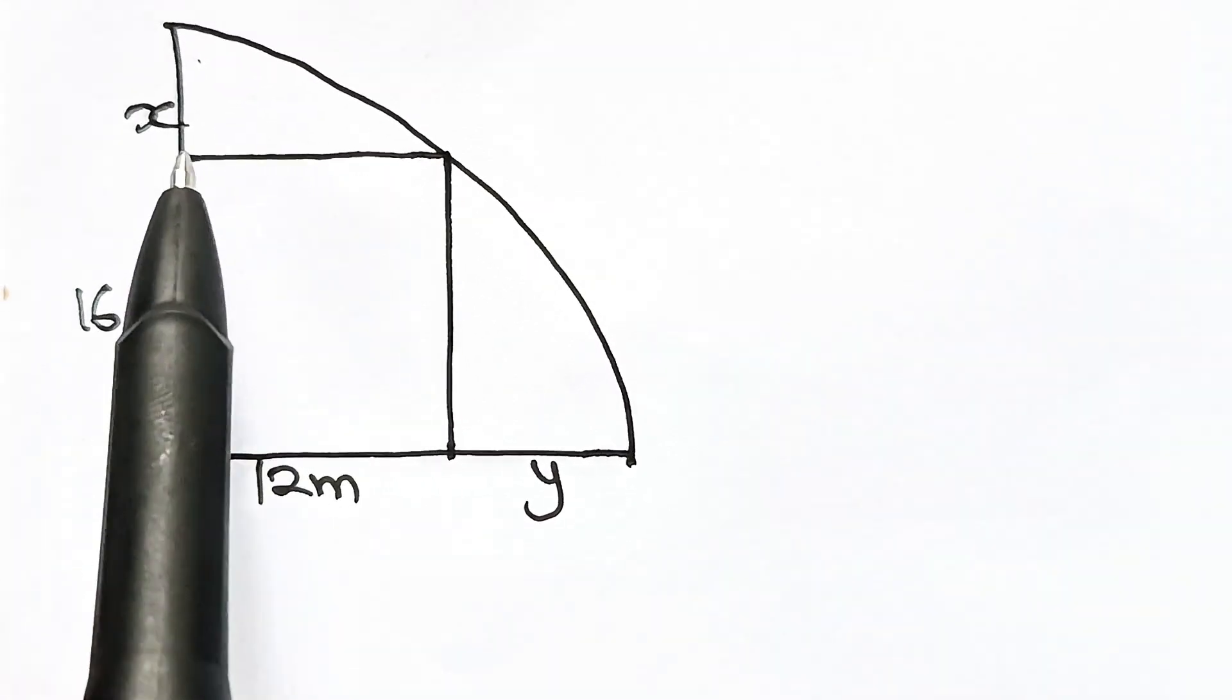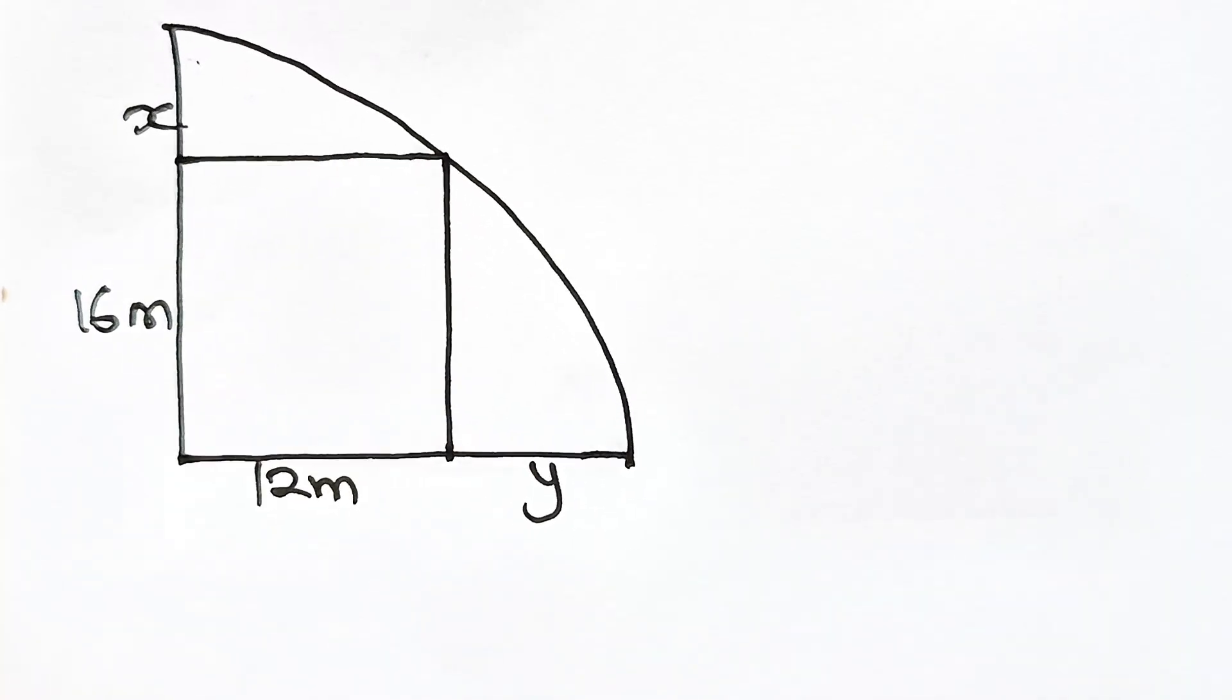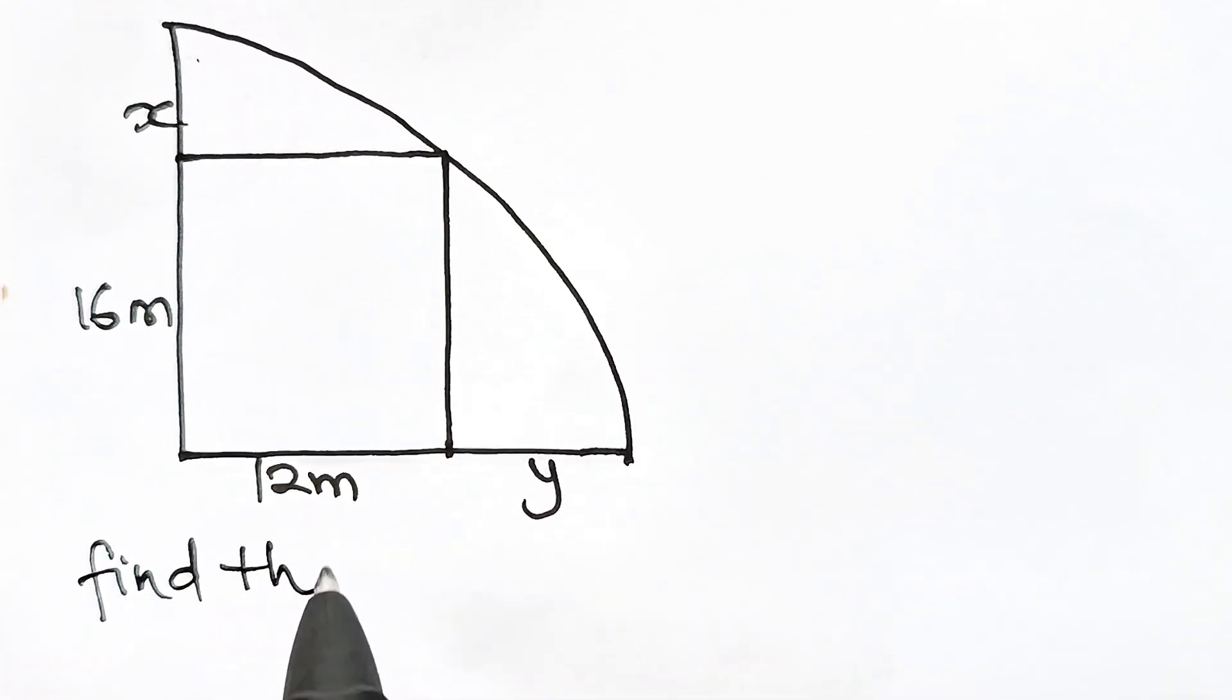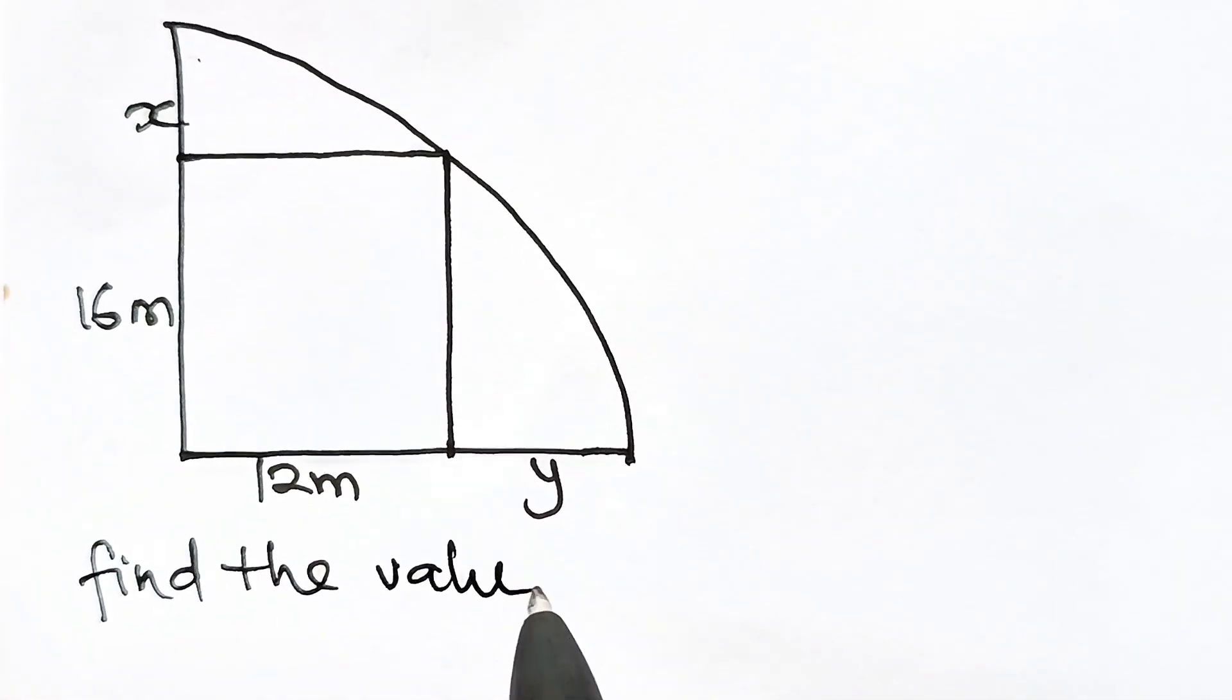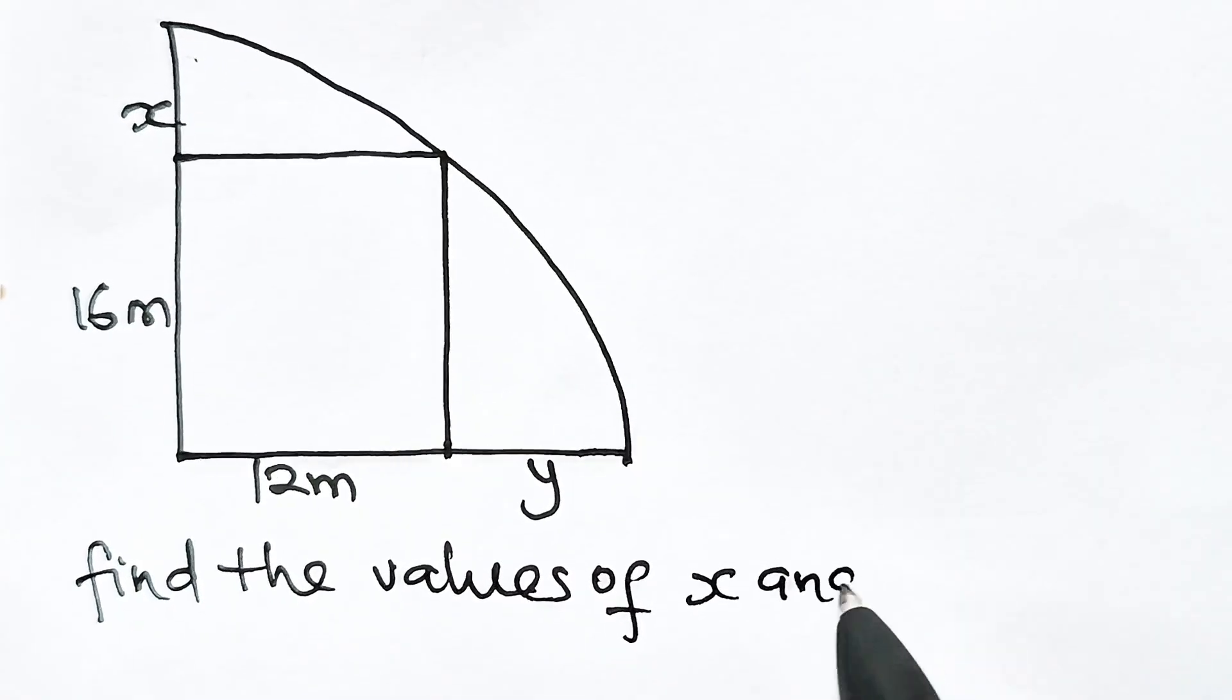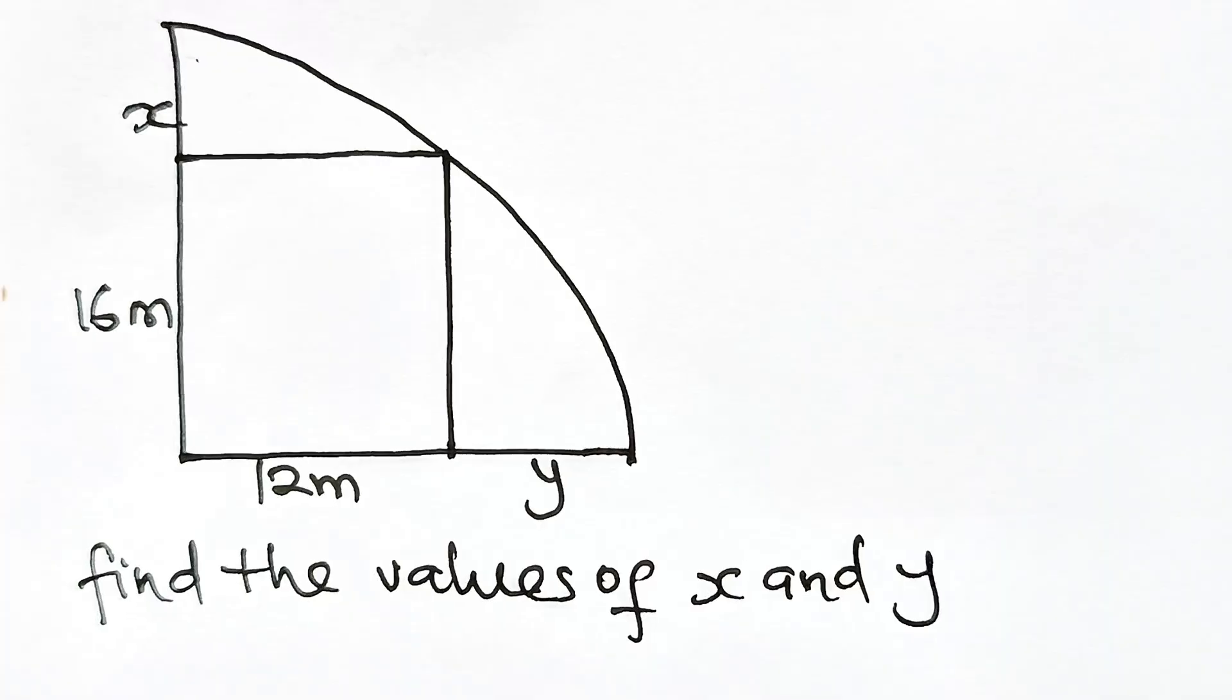From here to here we have x, and from here to here we have y. Now the question says we should find the values of x and y. Like I said, it's very easy.